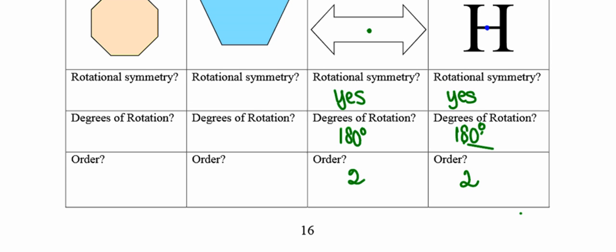Now I'm going to look at the blue trapezoid. I'm asking myself: is there some way I can rotate this figure about its center so that after some number of degrees of rotation it will appear unchanged — nothing different, mapped onto itself? In order to get it to map back onto itself, I'm going to require a full 360 degrees of rotation. So for that reason, since we require a full 360 degrees to get back to where we started, it does not have rotational symmetry. It requires a full 360 degrees to map back onto itself, and since it appears exactly the same in only one position, its order is 1.